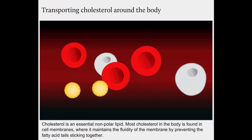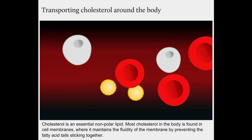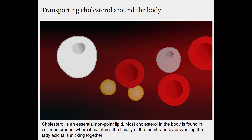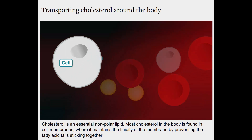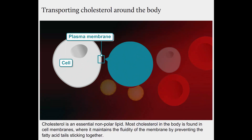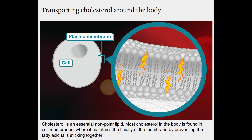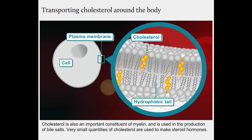Cholesterol is an essential non-polar lipid. Most cholesterol in the body is found in cell membranes where it maintains the fluidity of the membrane by preventing the fatty acid tails sticking together. Cholesterol is also an important constituent of myelin and is used in the production of bile salts. Very small quantities of cholesterol are used to make steroid hormones.